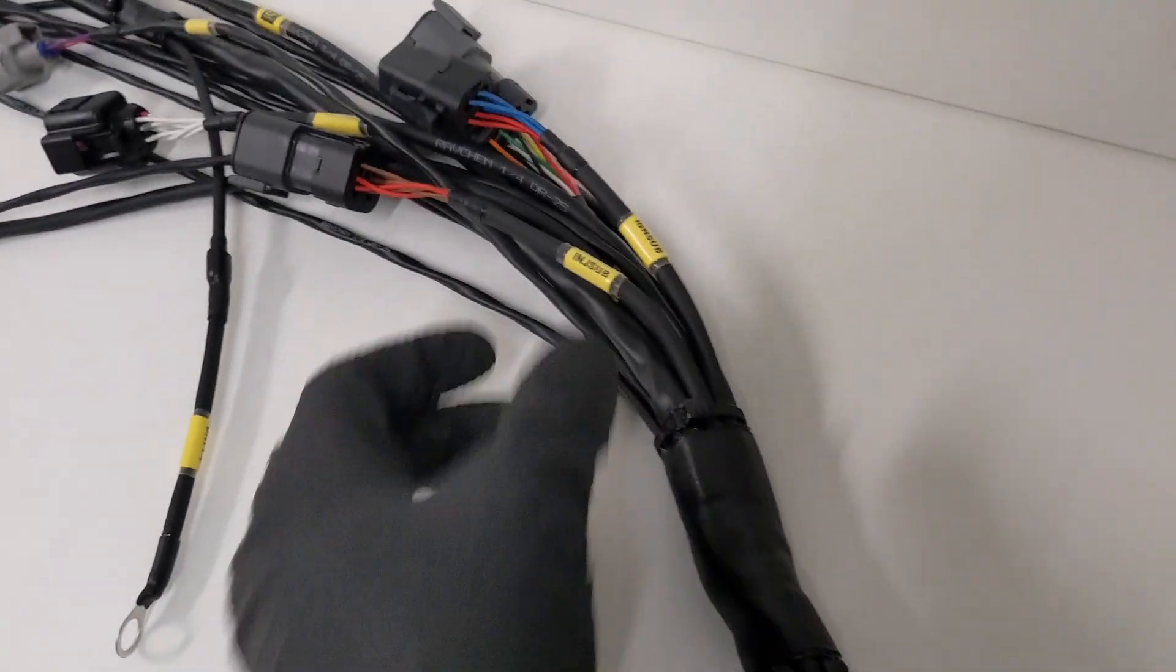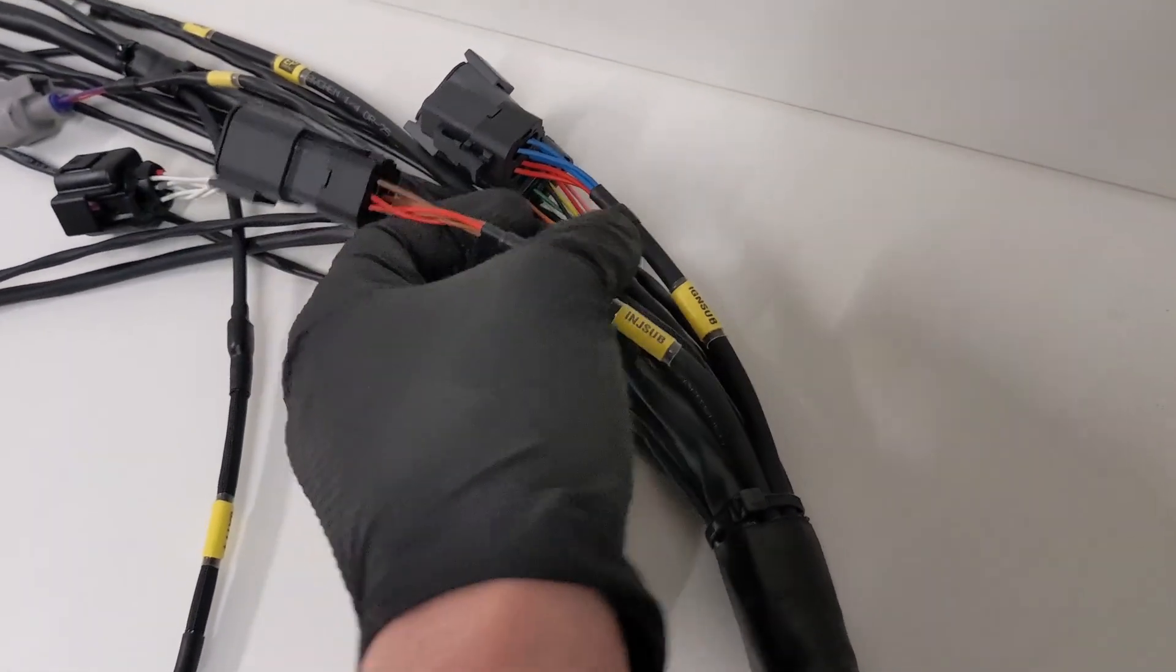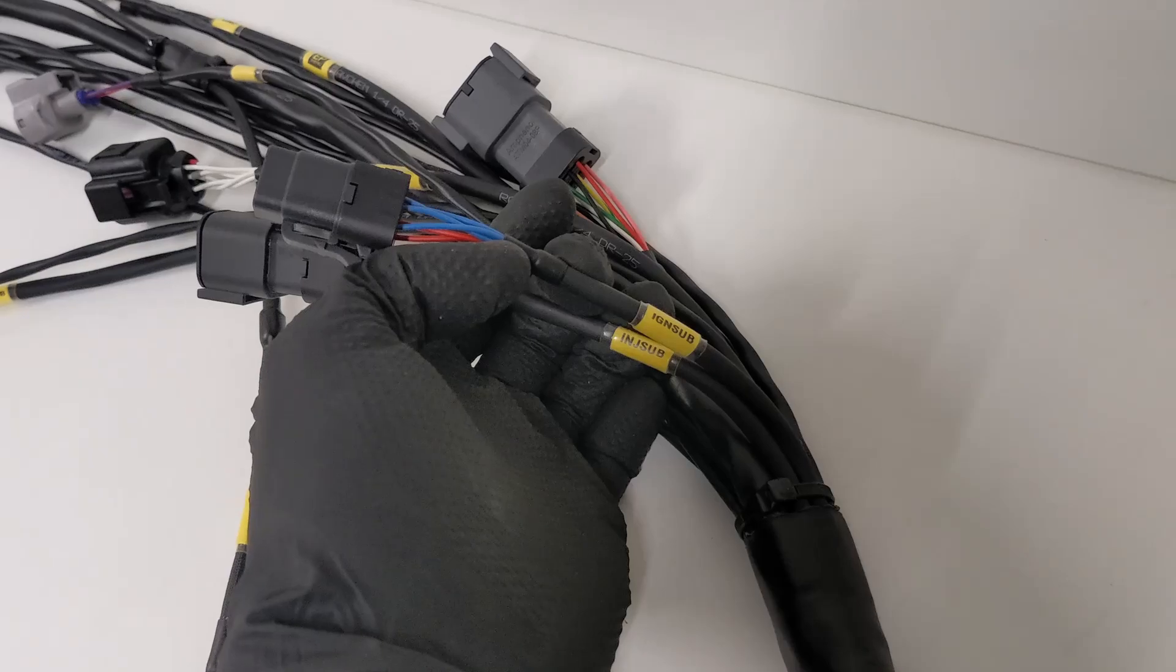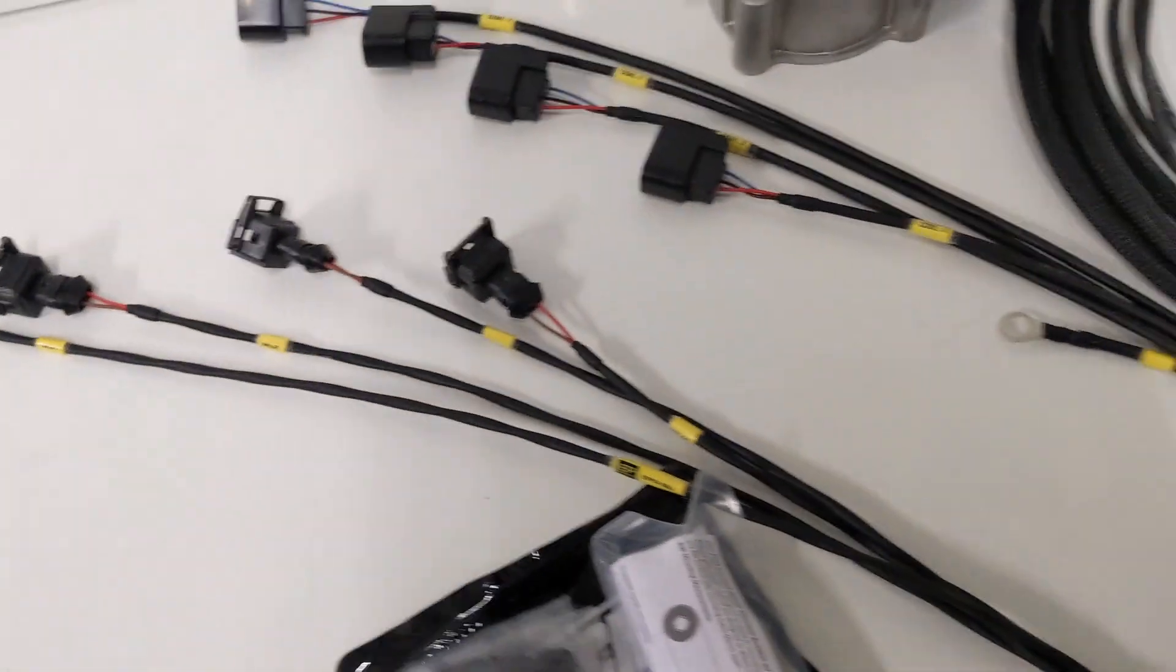If we come into the engine bay, we start off with our sublooms. We've got an injector subloom and an ignition subloom, and we've got them over here laid out.